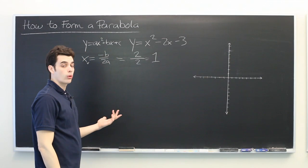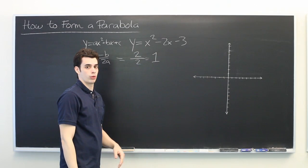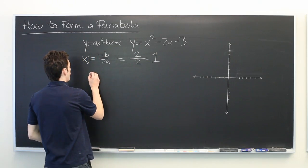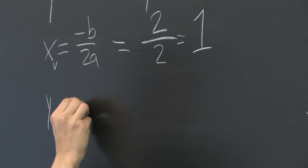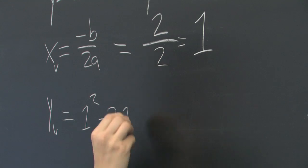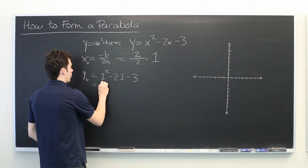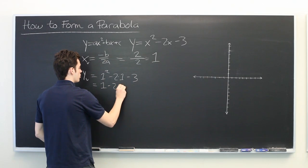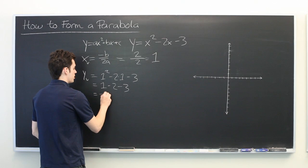Now to find the y coordinate of the vertex, we simply take this number and plug it back into our original equation. So yv is equal to 1 squared minus 2 times 1 minus 3, or 1 minus 2 minus 3, which is equal to negative 4.